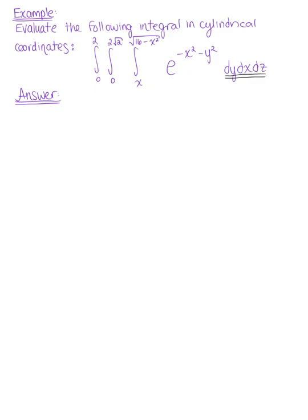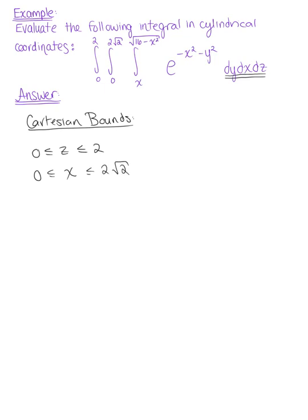Our outer bounds are in terms of z. For our Cartesian bounds: z is greater than or equal to 0, less than or equal to 2. We have x is greater than or equal to 0, less than or equal to 2 times the square root of 2. And then y is greater than or equal to x, less than or equal to the square root of 16 minus x squared.